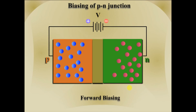As a result, the width of the depletion layer decreases. The holes, which are the majority carriers in the p region, are repelled by the positive terminal of the battery. Similarly, electrons, which are the majority carriers in the n region, are repelled by the negative terminal of the battery. As a result of this repulsion of majority charge carriers by the battery, diffusion starts across the junction and forward current is established in the PN junction.